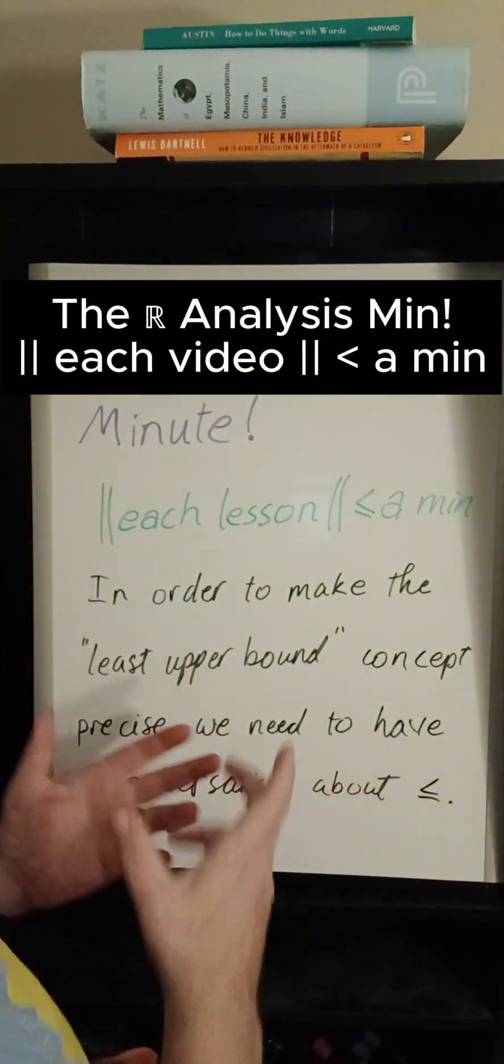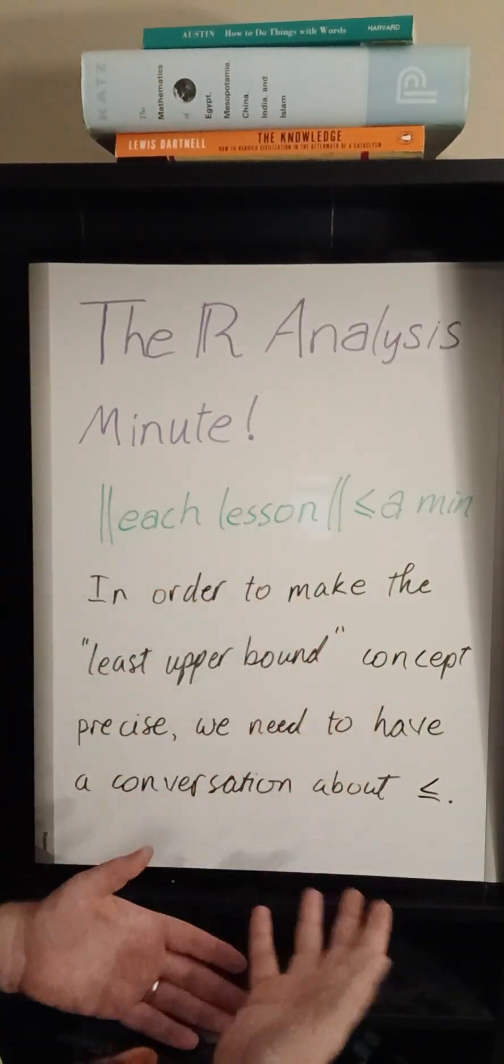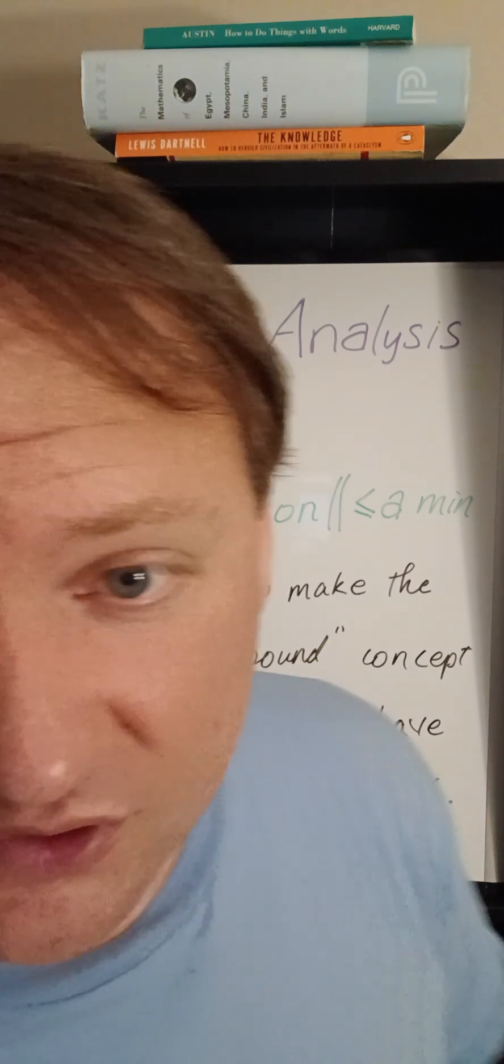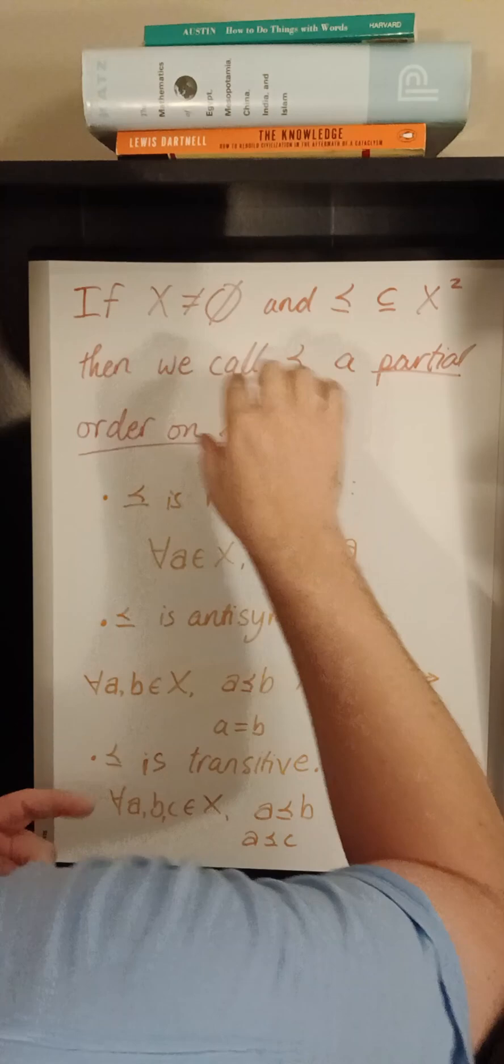Now, in the last video, we talked about this concept of the least upper bound, but to make that rigorous, we have to talk about the notion of ordering numbers. And so we define the notion of an abstract partial order.